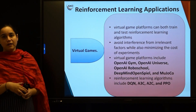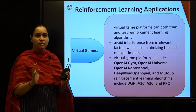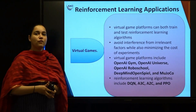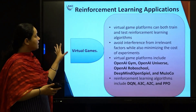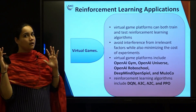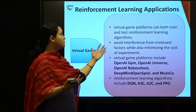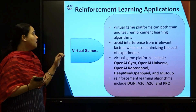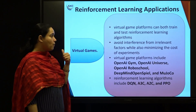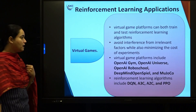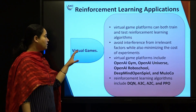Next is reinforcement learning. In simple terms, it is about how a robot thinks and views a scenario just like a human. The first sub-application is virtual games. Virtual game platforms can both train and test reinforcement learning algorithms, avoiding interference from irrelevant factors while minimizing experimental costs. Virtual gaming platforms include OpenAI Gym, OpenAI Universe, and OpenAI RoboSchool. Algorithms used include DQN, A3C, A2C, and PPO.